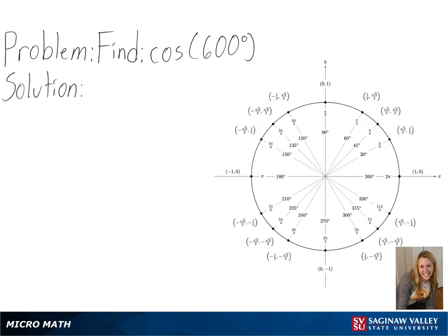We can see here that our value is larger than 360 degrees, so we will start by separating 600° into 360° plus 240°.